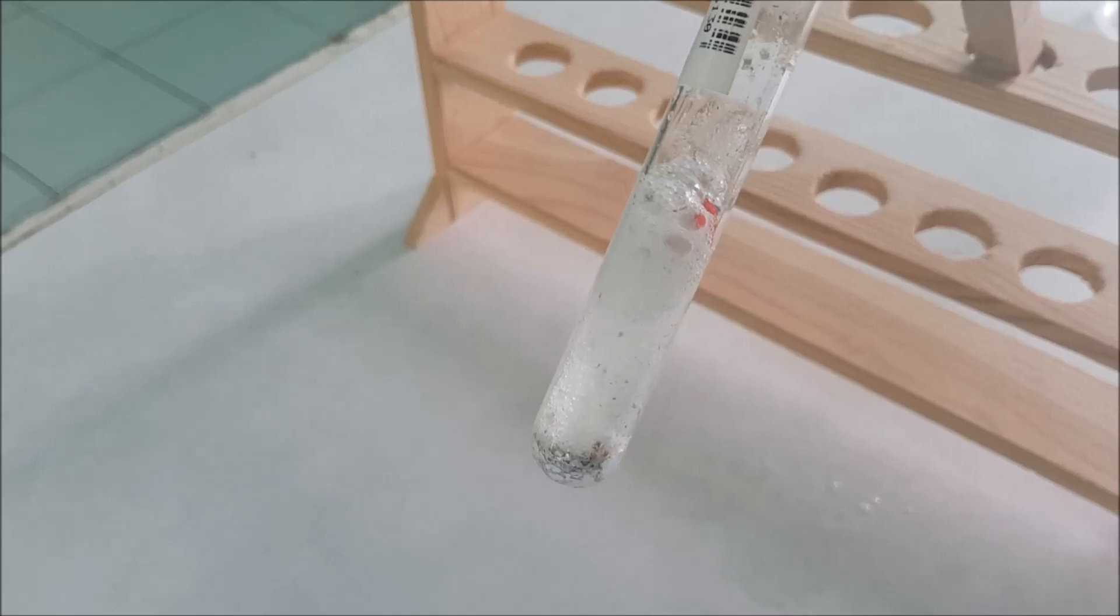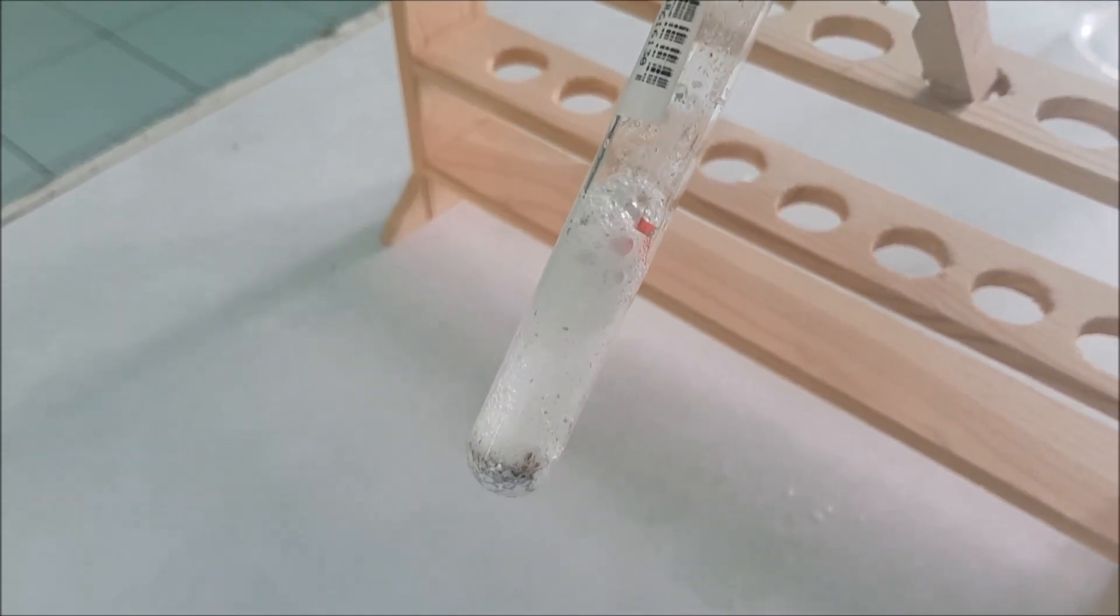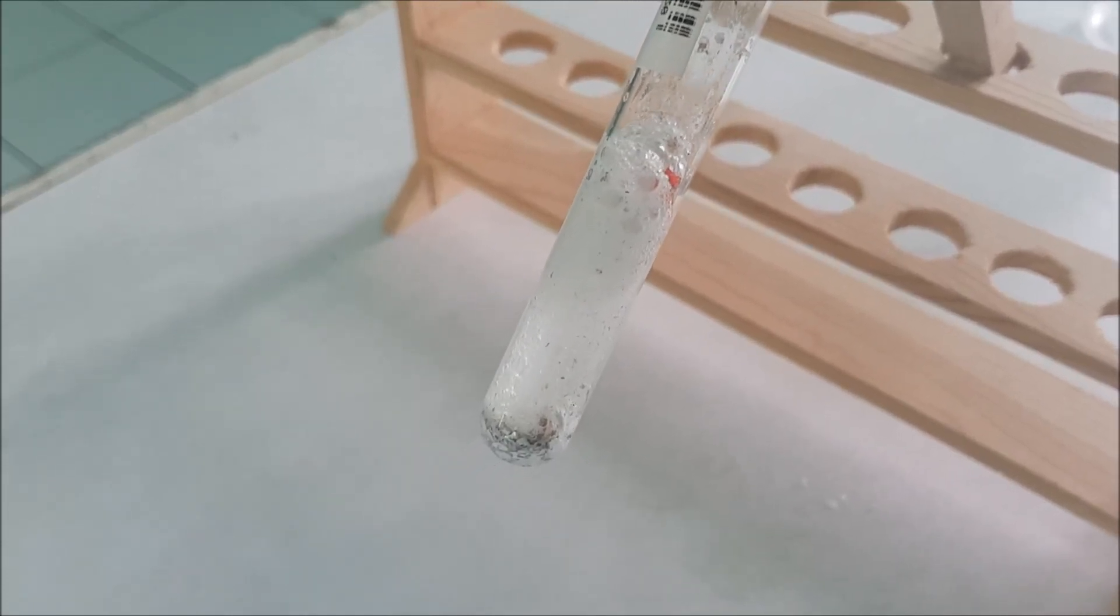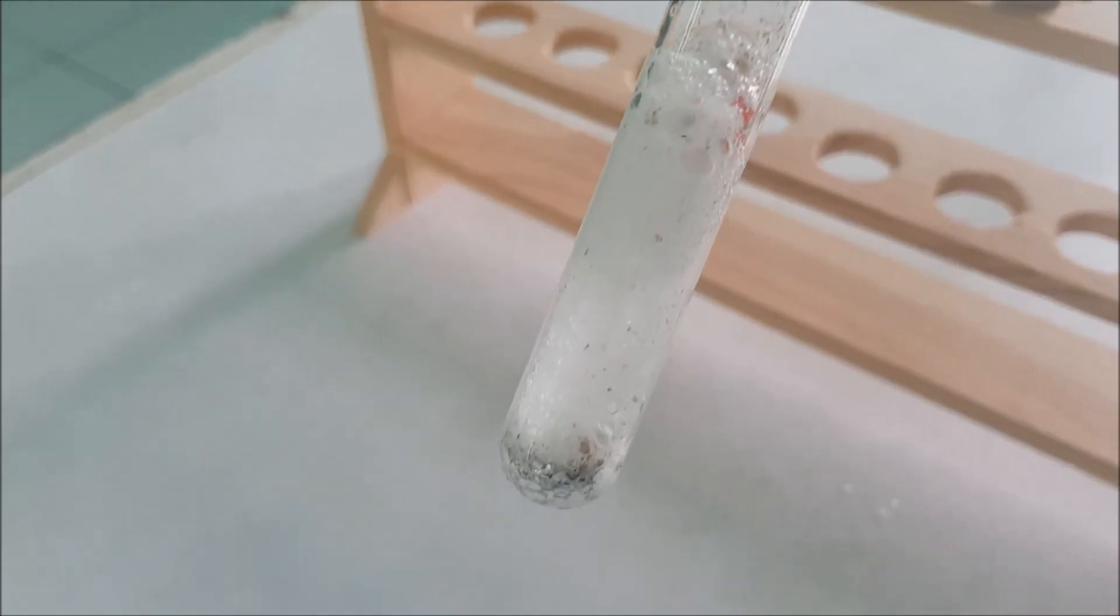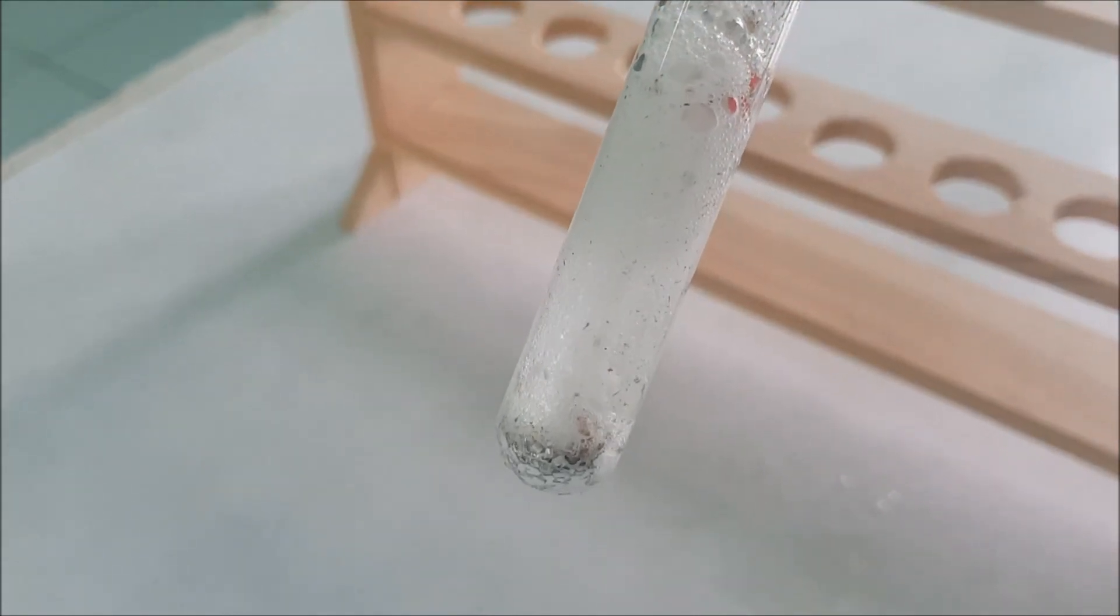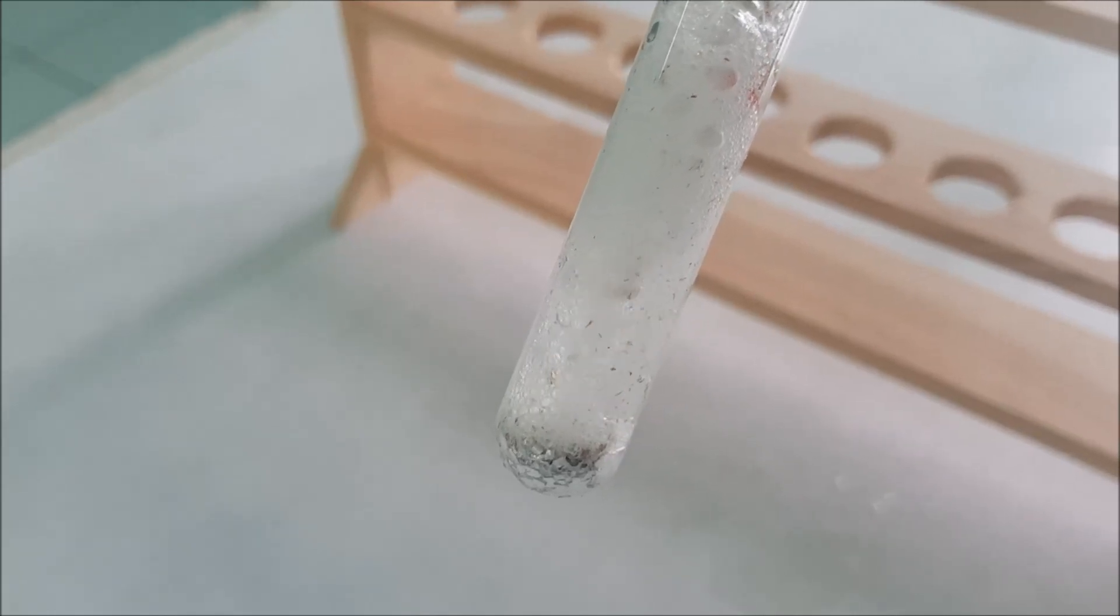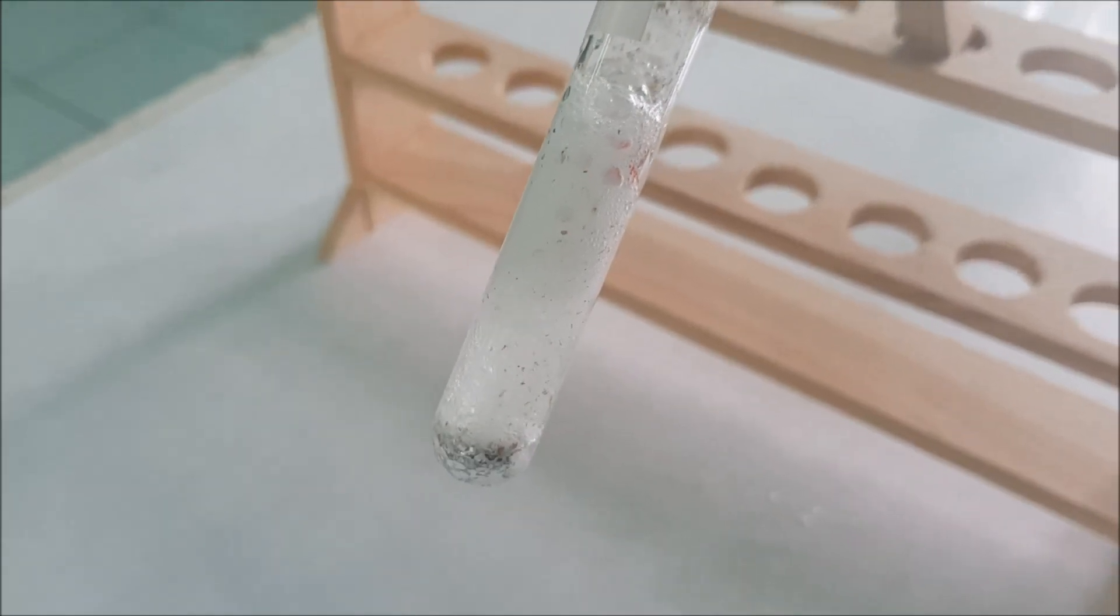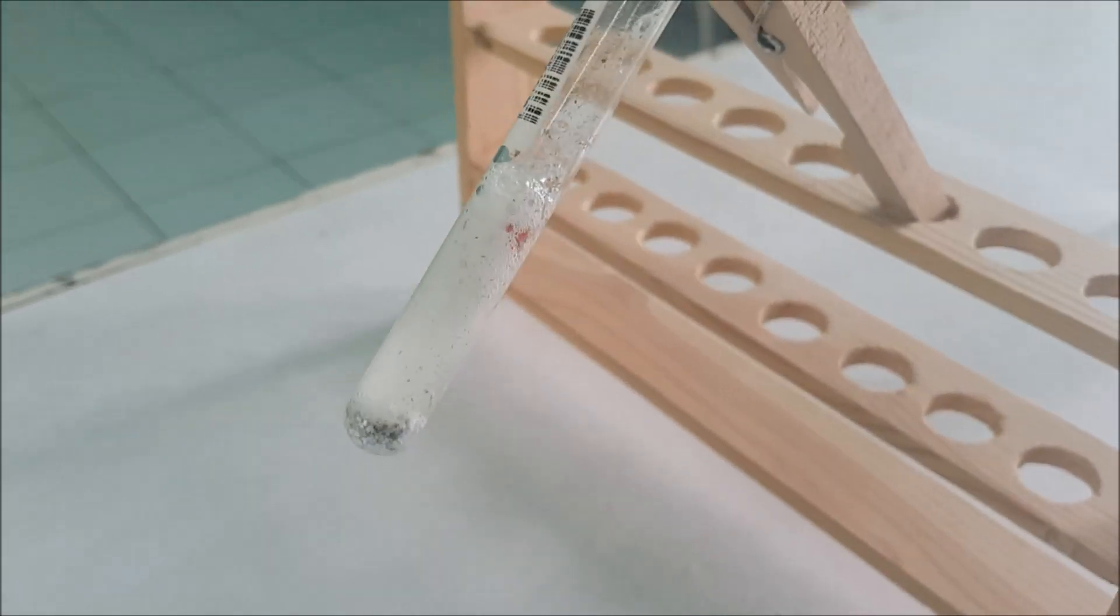As you can see, bubbles are being produced also. And that is one indicator that there is a chemical reaction. Therefore, this particular example is a chemical change. The aluminum starts to melt already. And this one also produces hydrogen gas.